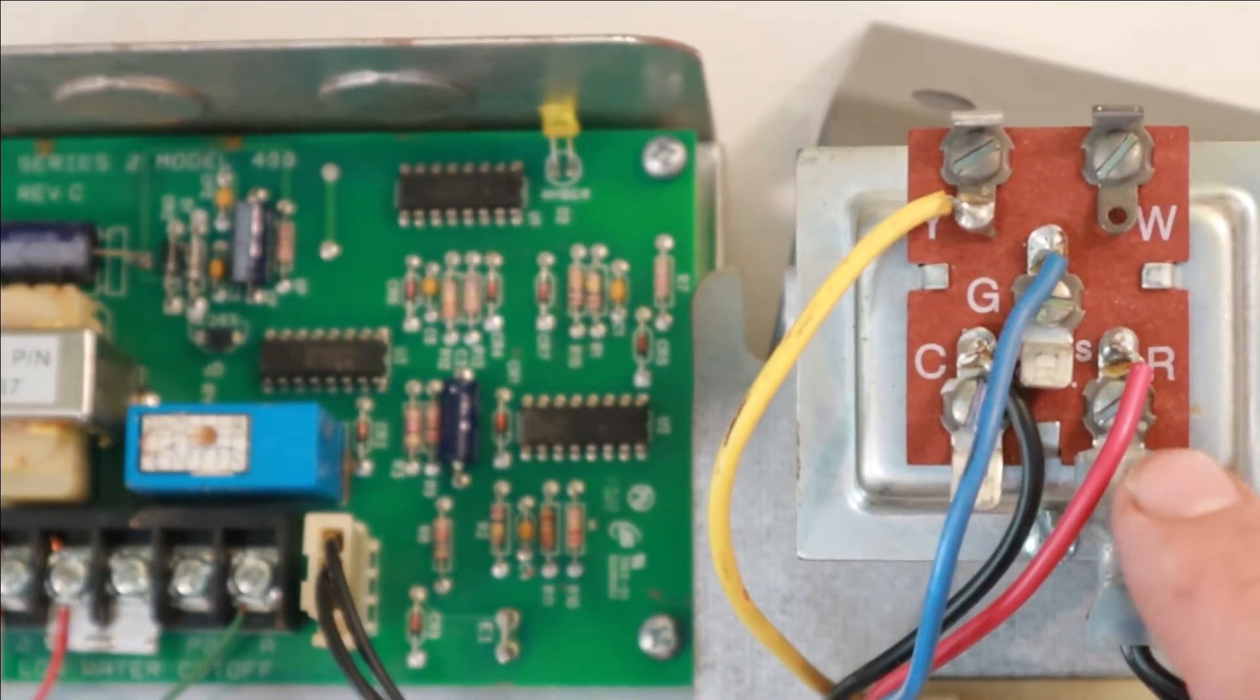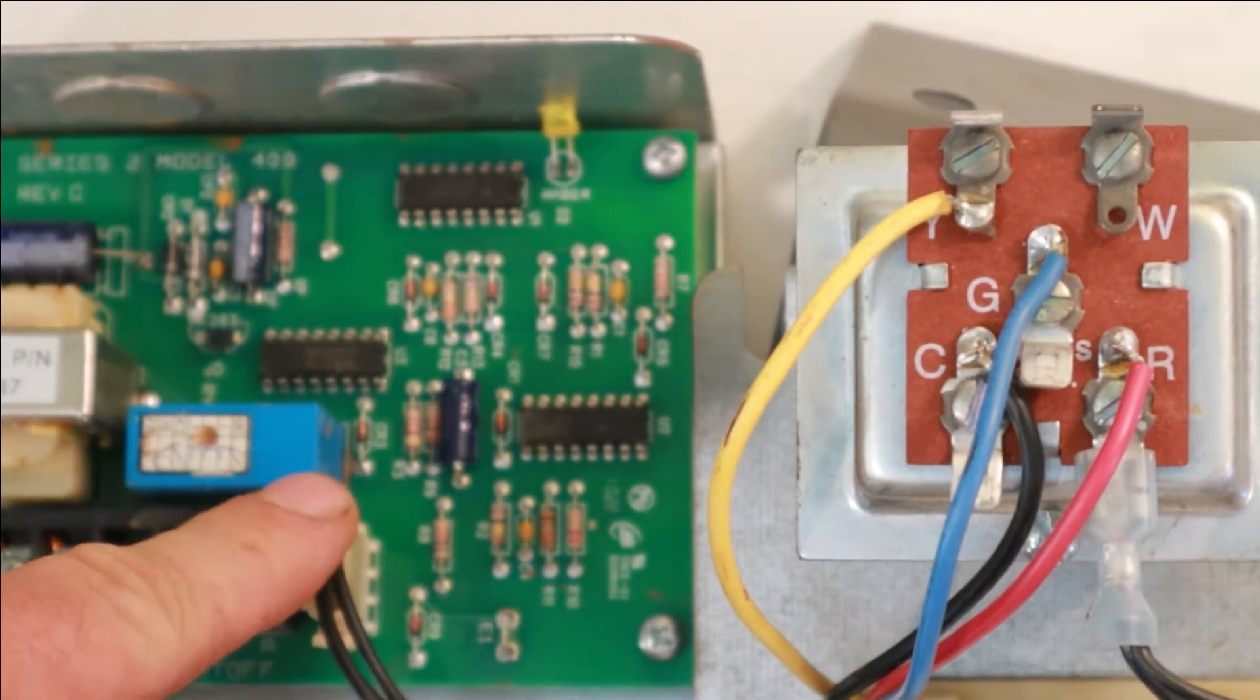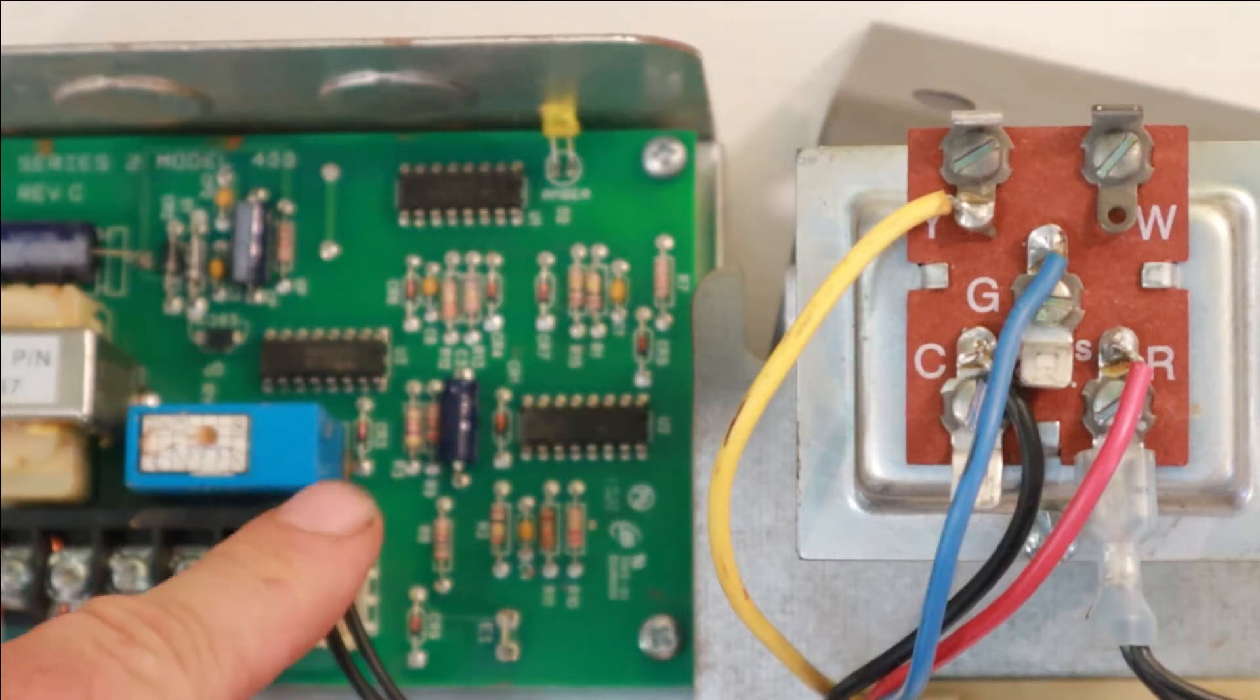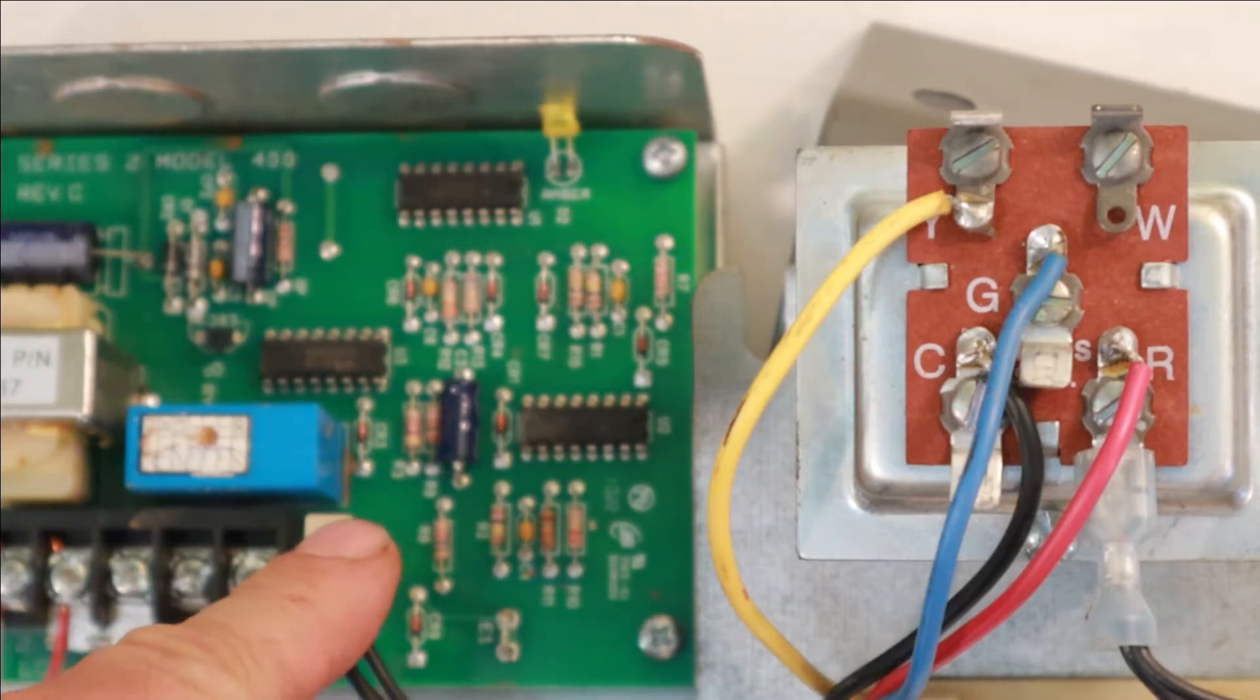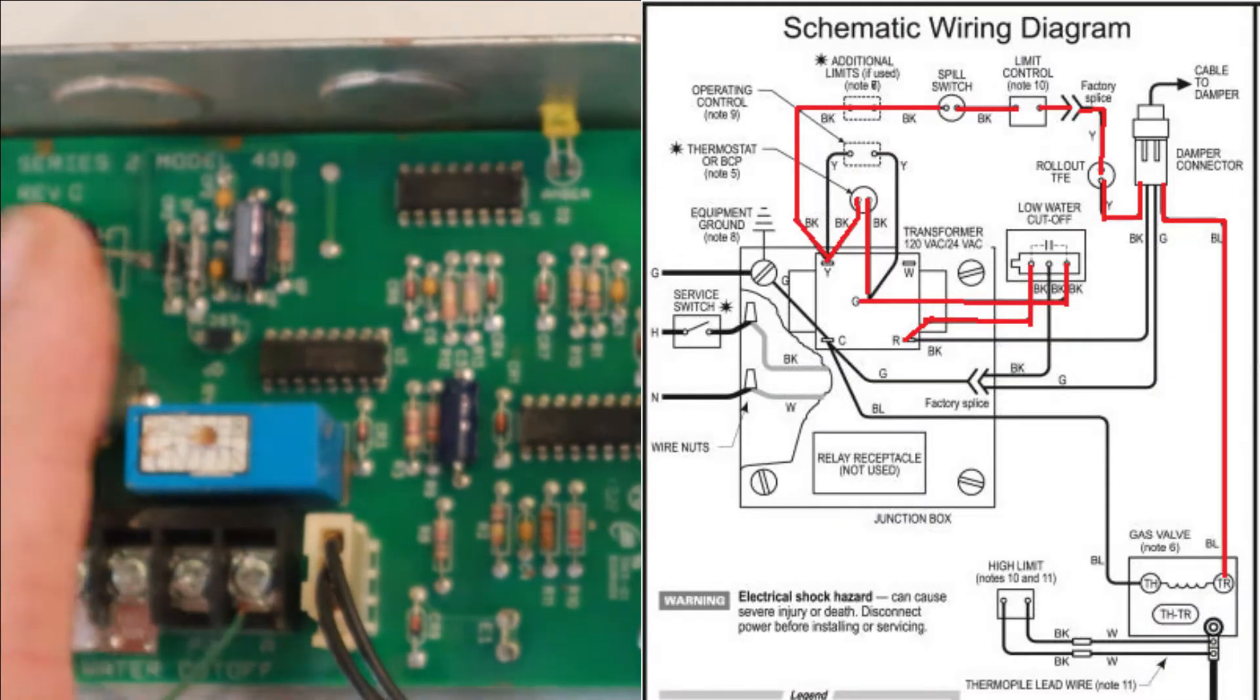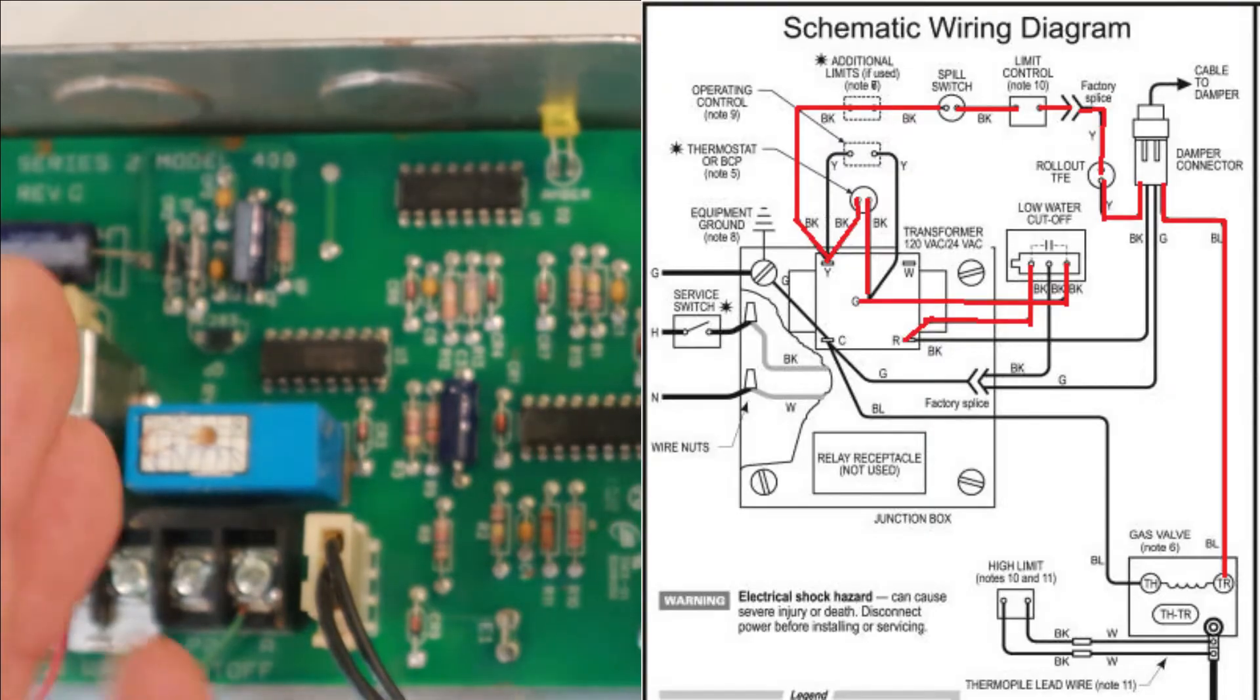The 24 volts provided by your R terminal on the transformer, when it gets to the low water cutoff, this is the voltage that's going to go through all the safeties in your circuit until it eventually gets to the gas valve. So that's going to be the spill switch, your pressure troll, your vent damper, and everything else.